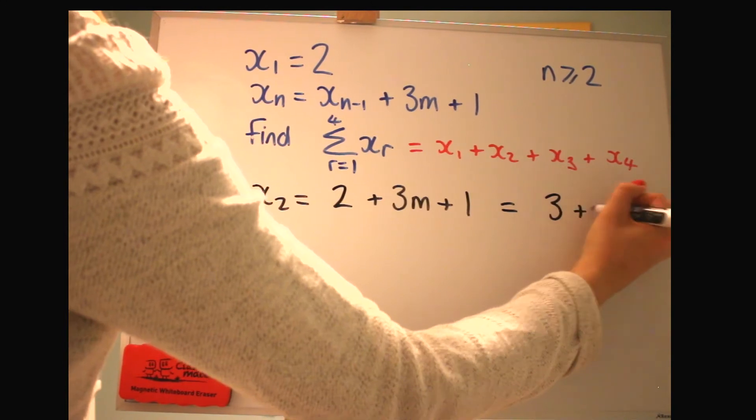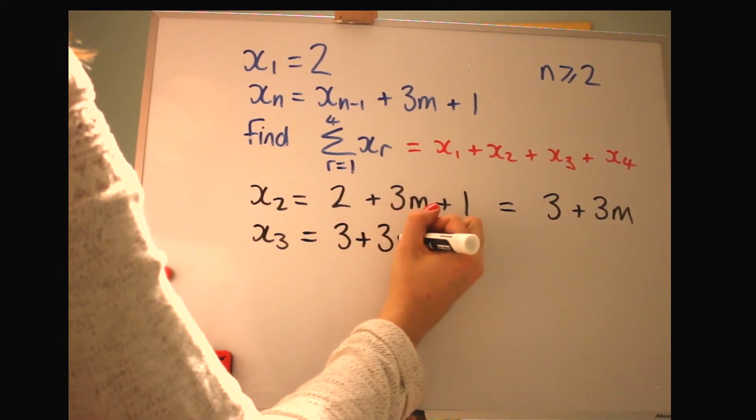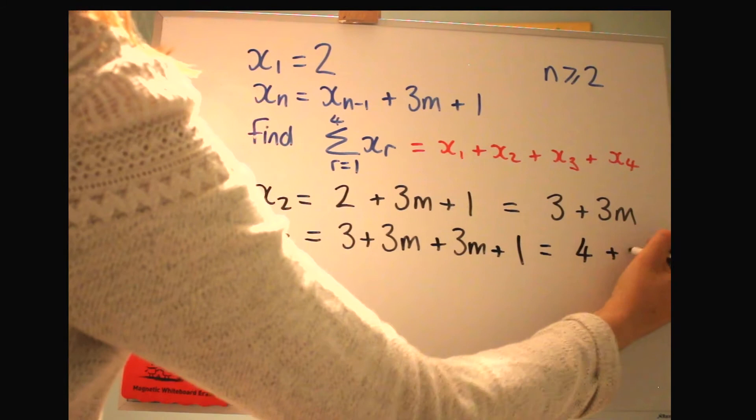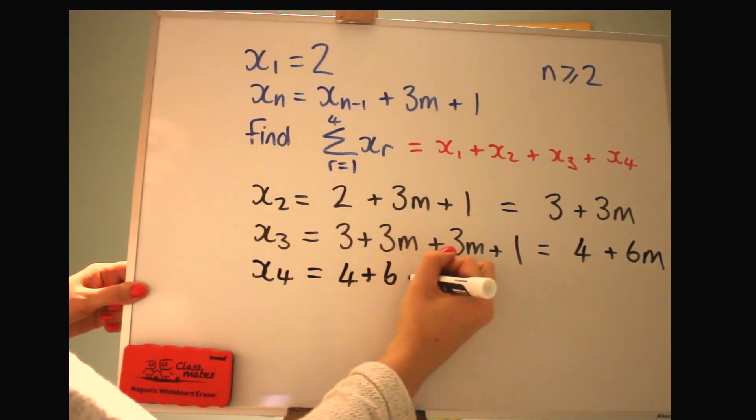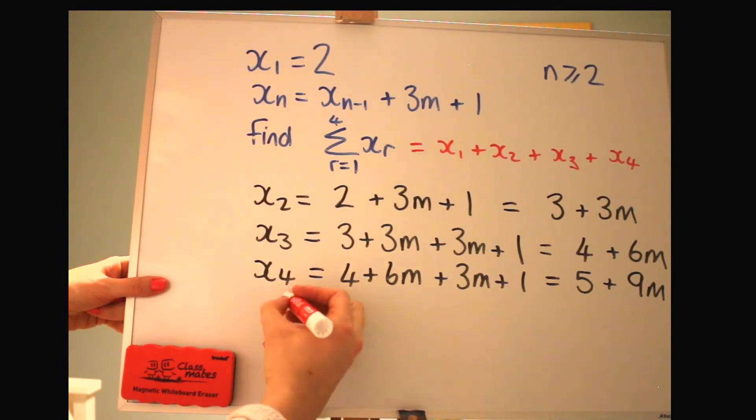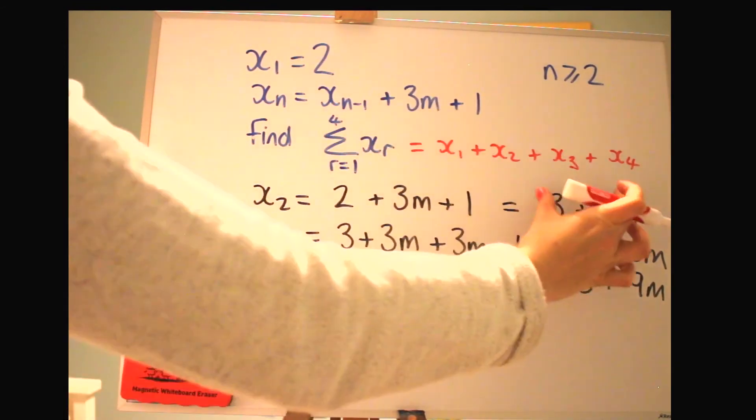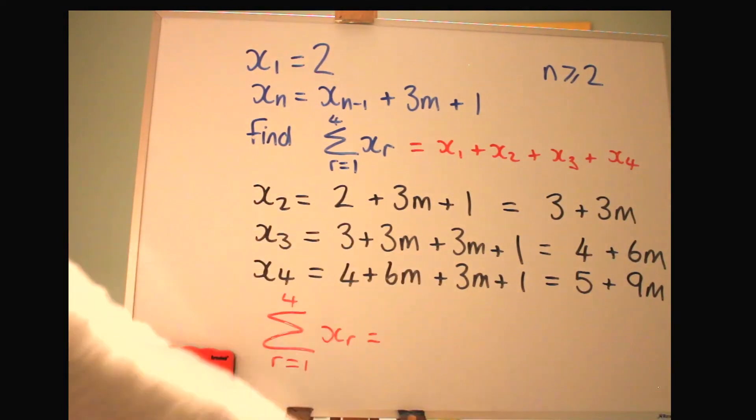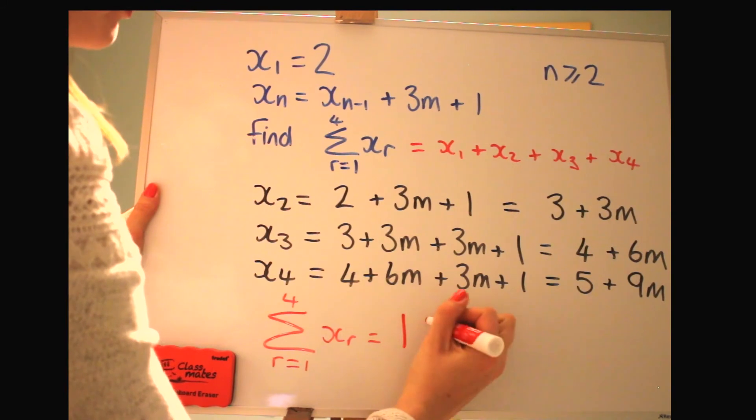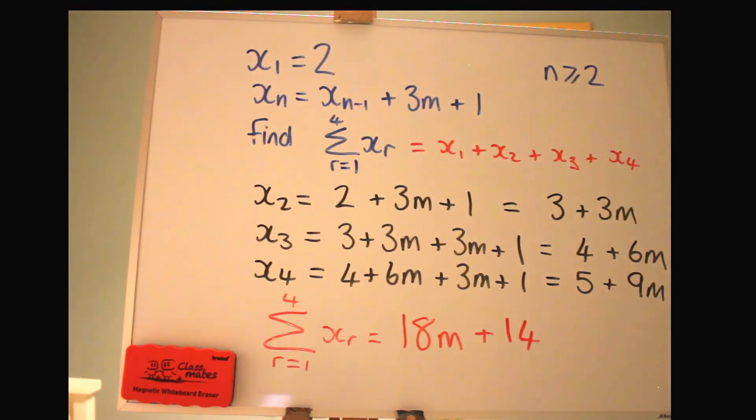X2, and then we can just tidy that up. So we've got 3 plus 3M. X3, do have a go at this. So we've got our previous term and then plus another 3M plus 1 and tidy that up again. And then X4. Now we can do our sum. So that's going to be our X1 plus X2 plus X3 plus X4. So that's 2 plus all of these. I'm not going to write it all out. I'm just going to add them up as we go. So I'll add the M terms first. So that would be 18M, and the numbers I get 14. Fab! Hope that made sense. Let's look at one more question.